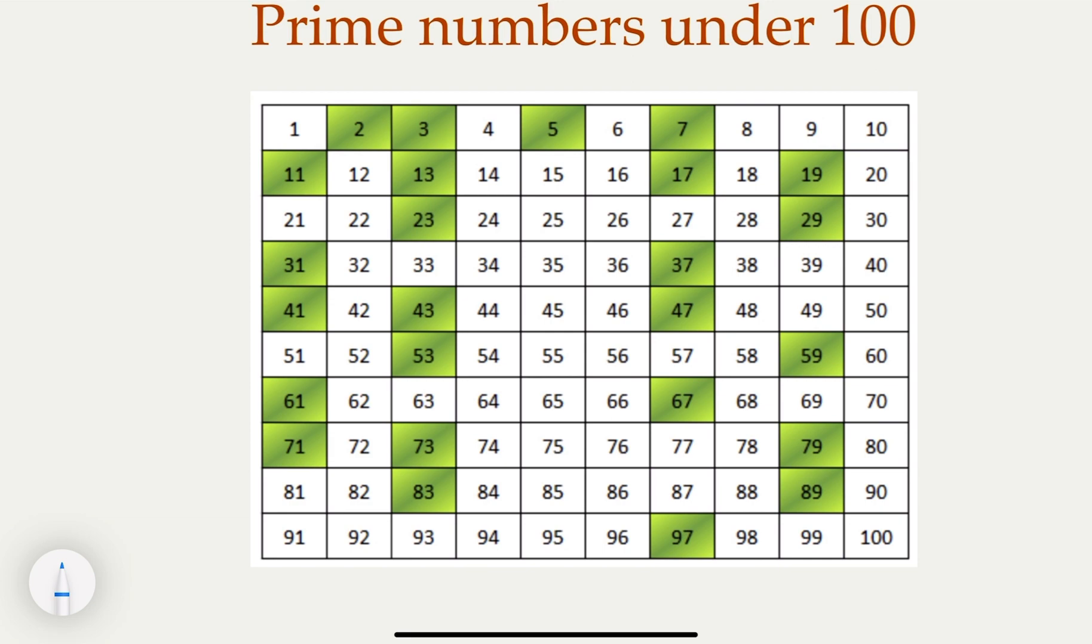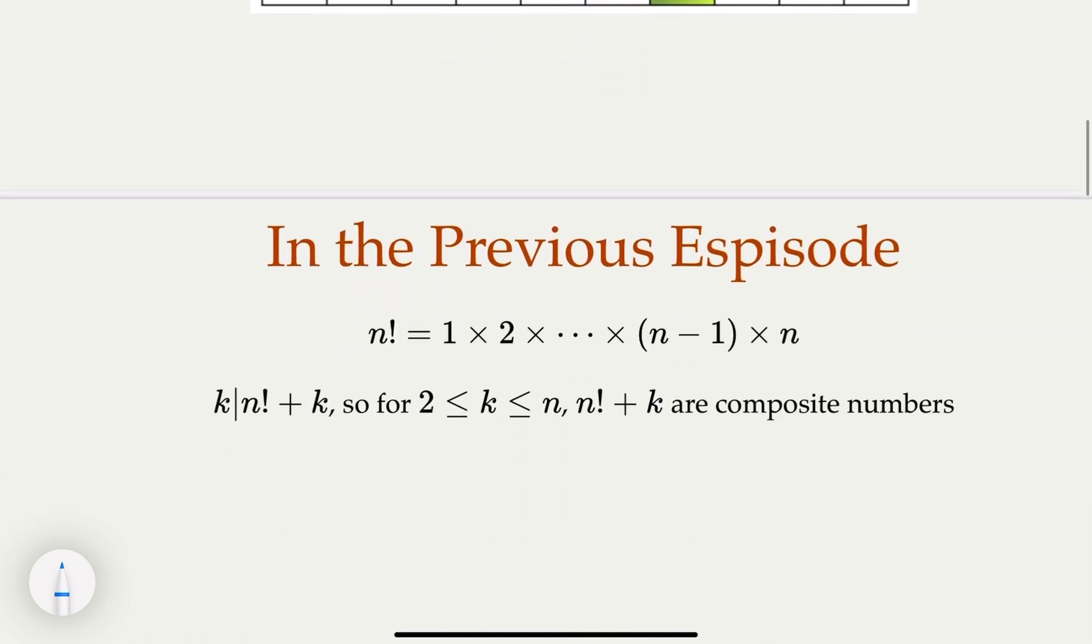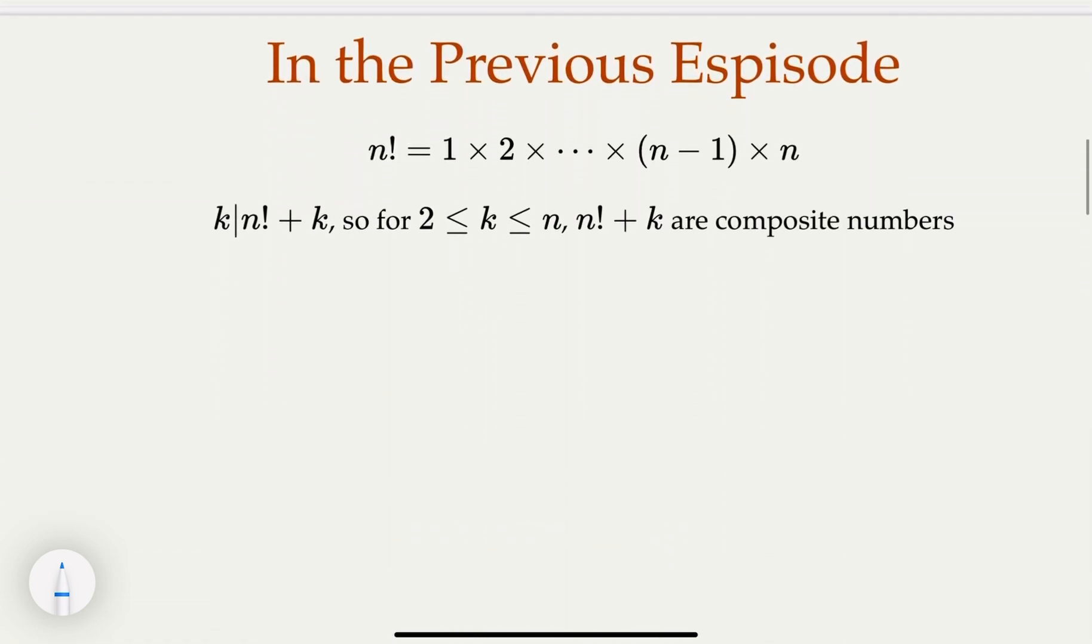In the previous video, we actually showed the method proving that by using factorials. We claimed that for a given number n, n factorial plus k for k in a certain range—in other words, there're going to be n minus 1 total consecutive numbers in this form.